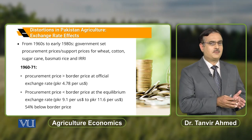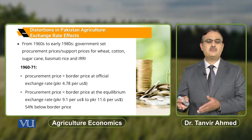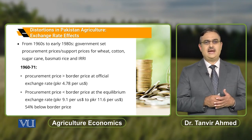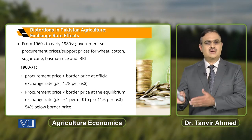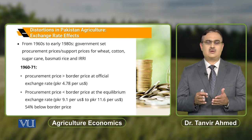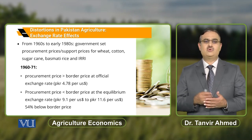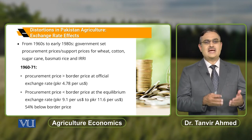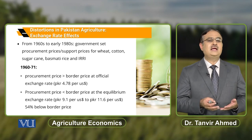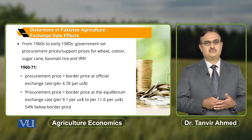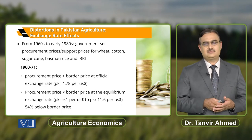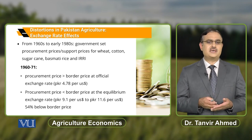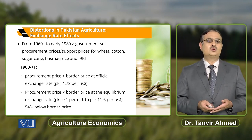However, when you compare this procurement price with the equilibrium exchange rate prevailing in the market — which was approximately 9.1 to 11.6 rupees per US dollar when the official rate was PKR 4.78 — the procurement price set by the government is less than the border price of these commodities. In fact, at this equilibrium exchange rate, procurement prices are 54% below the border price.